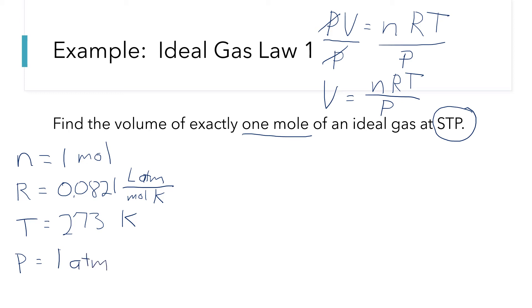So now if I come over here and plug everything into my equation for V, for N, I'm going to plug in one mole. For R, 0.0821. And I'm going to skip writing all of those units because I'm running out of room. For T, I'm going to have 273 Kelvin. And for P, I'm going to have the one atmospheres.